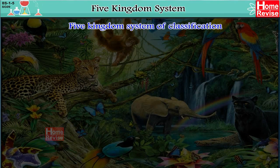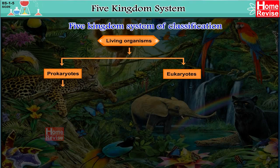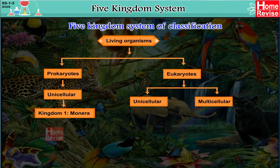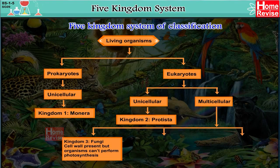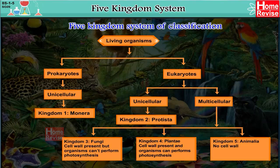Five Kingdoms System of Classification: Living organisms are classified into Prokaryotes and Eukaryotes. Prokaryotes include unicellular organisms placed in Kingdom Monera. Eukaryotes include unicellular organisms in Kingdom Protista, and multicellular organisms in Kingdom Fungi (cell wall present, no photosynthesis), Kingdom Plantae (cell wall present, photosynthesis possible), and Kingdom Animalia (no cell wall).